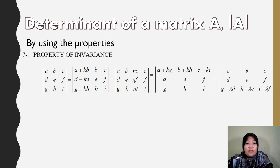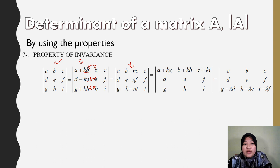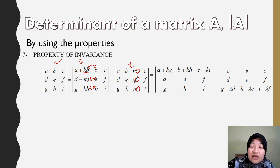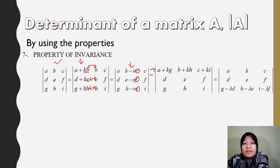Invariant property: the determinant remains the same if we add a scalar multiple of one row or column to another. For example, adding k times column B to column E leaves the determinant unchanged. This applies to any row or column. You will encounter a tutorial question that uses this property.